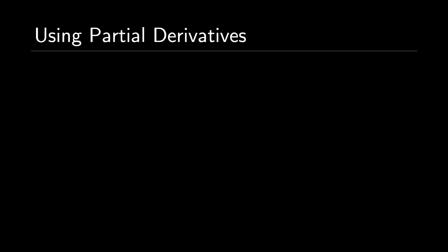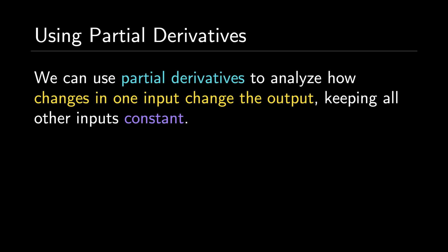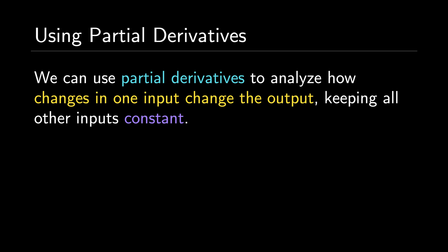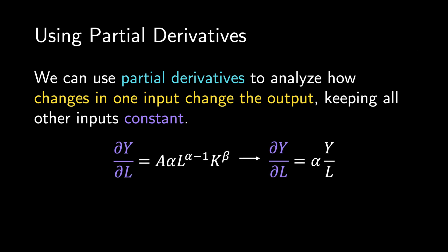We can analyze this function in many different ways. One notable way is to examine how a change in one parameter will affect total production, which we can easily do using partial derivatives. Suppose we want to analyze how total production changes as labor changes. We can take the partial derivative of Y with respect to L, yielding: the partial of Y with respect to L is equal to A times alpha times L to the alpha minus 1 times K to the beta. Recalling that Y equals A times L to the alpha times K to the beta, we can rewrite this as: the partial of Y with respect to L is equal to alpha times Y over L. This tells us that the rate of change of production with respect to labor equals the output elasticity of labor times total production divided by labor.